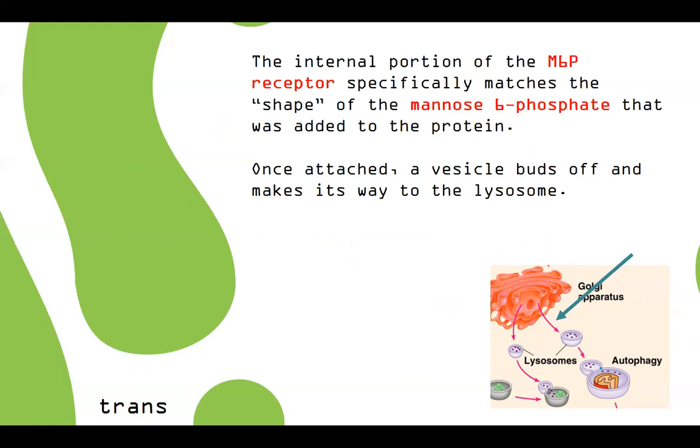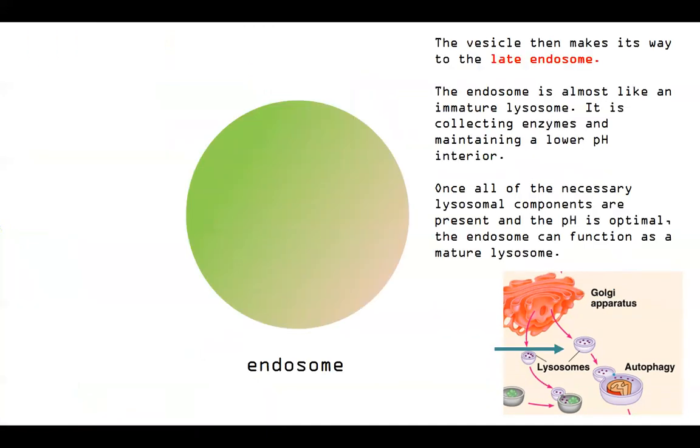So making our way to the lysosome. We're now on route. So it isn't really clearly shown in this picture. We just show mature lysosomes. But as we mature into a fully functional lysosome, we kind of go through a phase called the late endosome. So this is like an immature lysosome. So we're headed basically into the lysosome. Here is an immature lysosome we're looking at called an endosome. So this endosome is collecting enzymes from the Golgi apparatus. So it's getting ready to receive ours. And it's starting to maintain a lower pH interior. So again, those acid hydrolases must have a low pH and acidic pH to function.